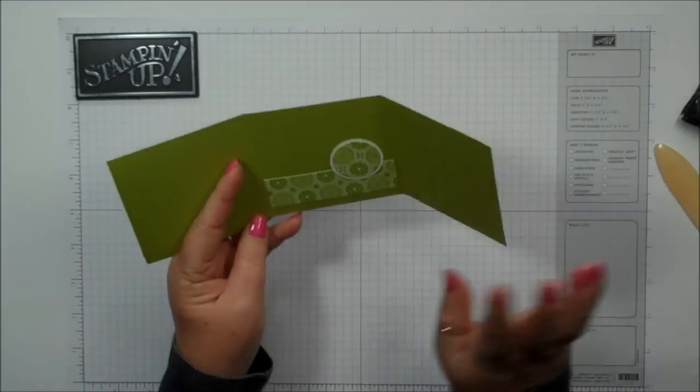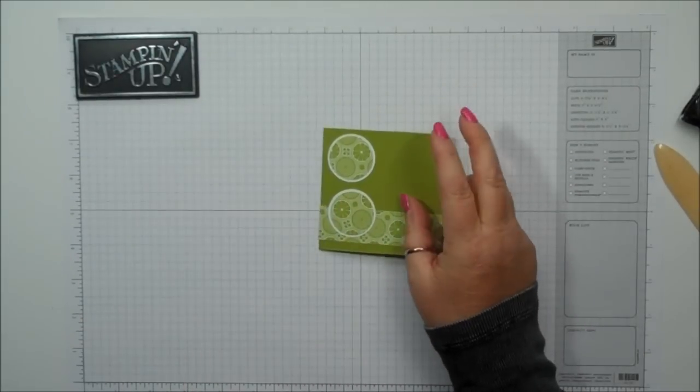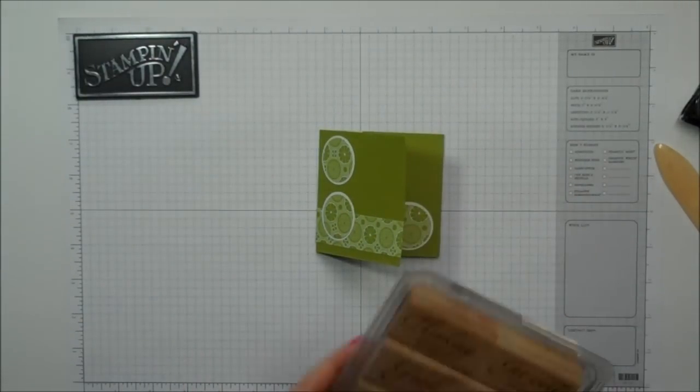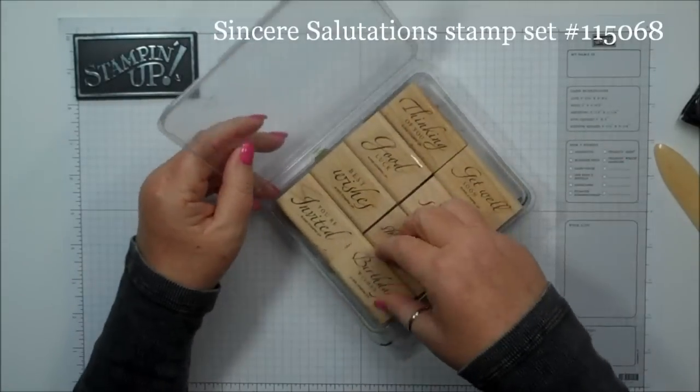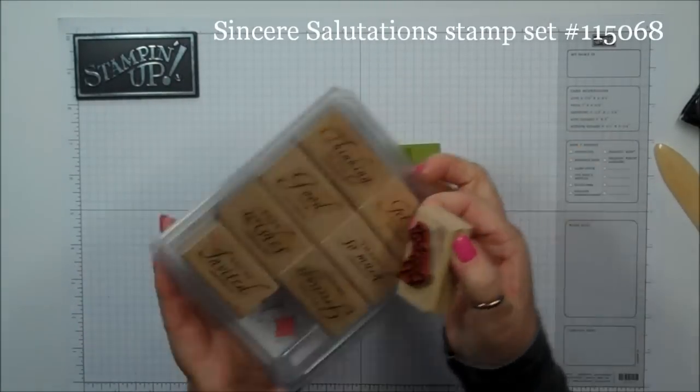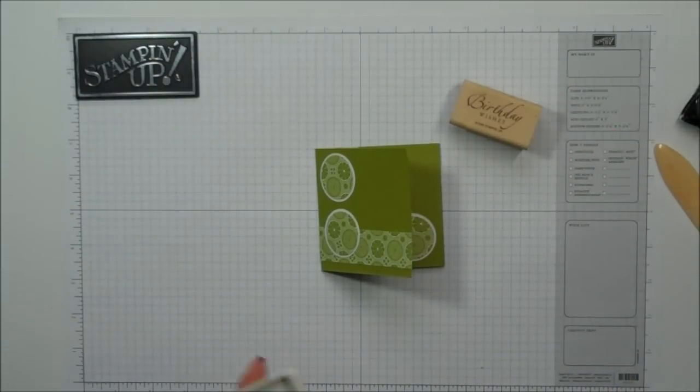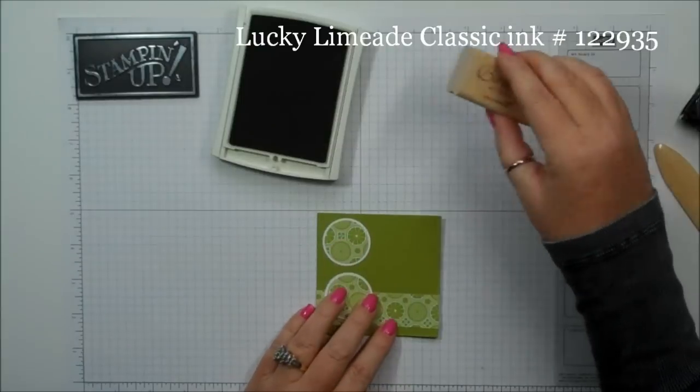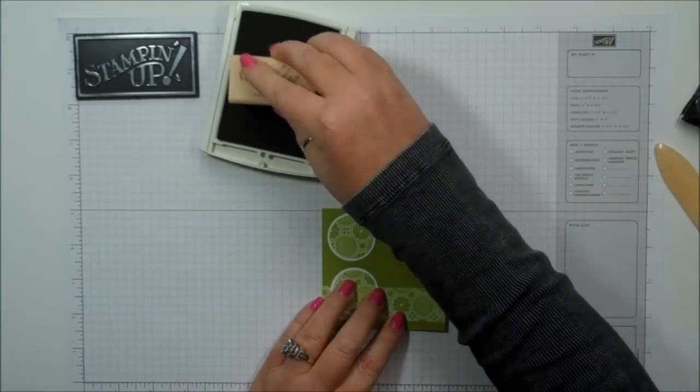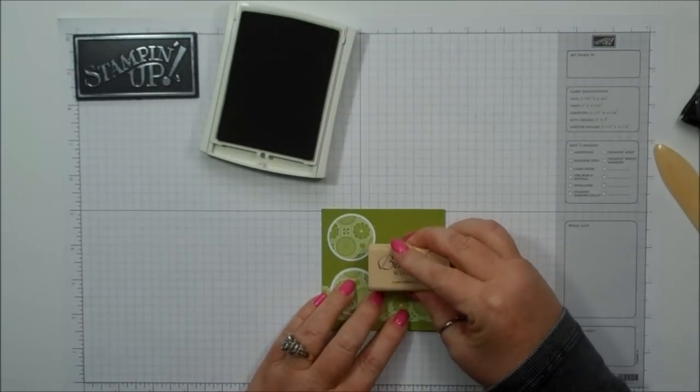Then you can stamp a whole bunch of different greetings. But I'm going to make mine into a birthday card. So I'm just going to use the Sincere Salutation stamp set. I'm going to use this Birthday Wishes and then I'm going to use the Lucky Limeade classic ink. I'm just going to stamp the Birthday Wishes right there.